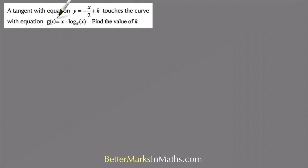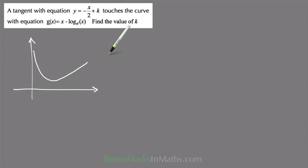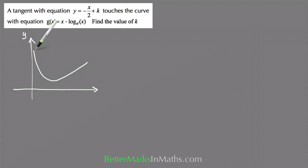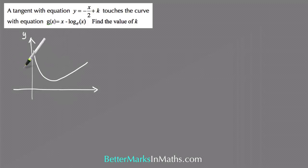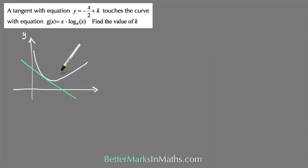The first thing I'm going to do is a sketch so I can see where the tangent is going to touch. Using my calculator I got a graph roughly like this — the y-axis becomes an asymptote, so this doesn't actually have a y-intercept. The gradient of this tangent is minus one half, meaning it slopes this way, and it's going to touch somewhere down here.